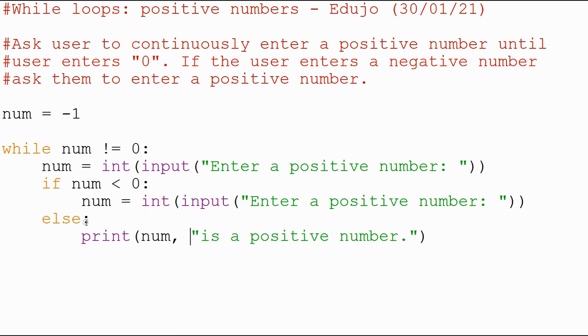So we start off with num equals negative one. Then we set that value of the variable to hopefully a positive number. It compares whether or not it is positive. If it's not, it says please enter a positive number. Otherwise it prints that whatever you entered is a positive number. And when you press zero, it comes out of it.